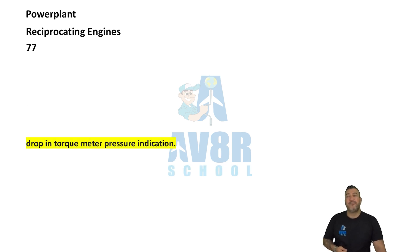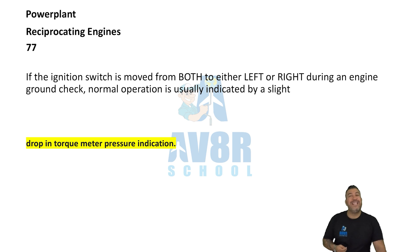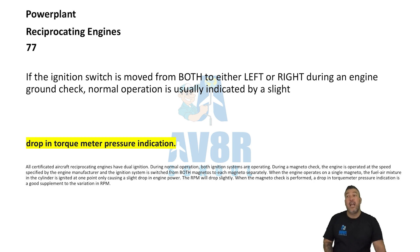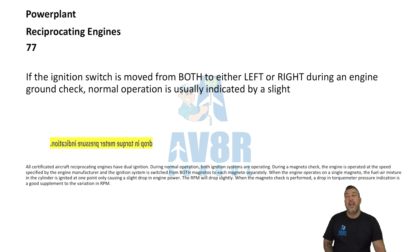Number 77: drop in torque meter pressure indication. If the ignition switch is moved from both to either left or right during an engine ground check, normal operation is usually indicated by a slight drop in torque meter pressure indication.